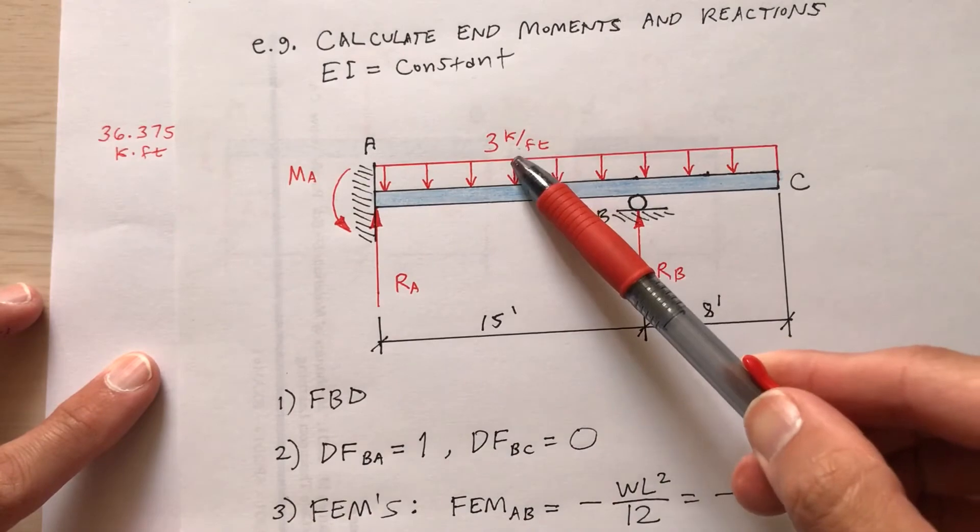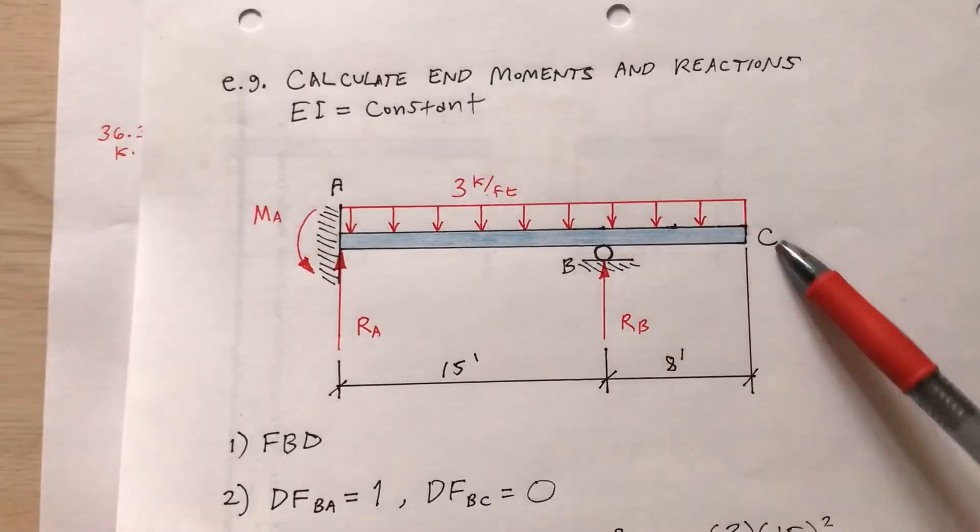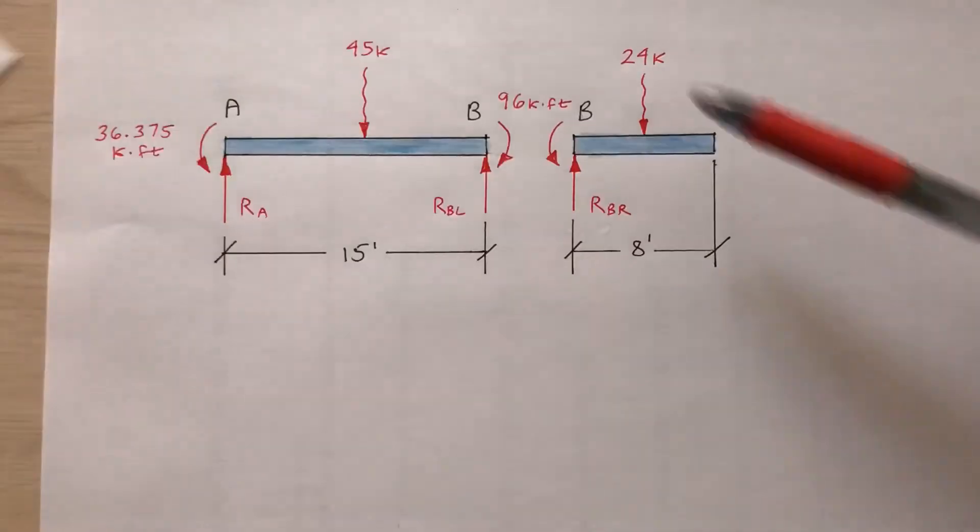45 kips. Between B and C, that's eight foot. Three kips per foot times eight foot, 24 kips.